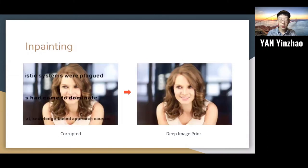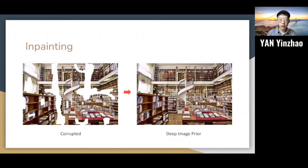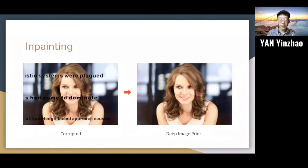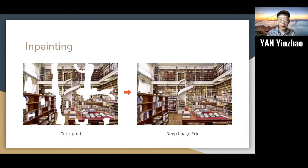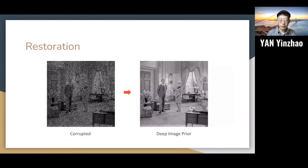For inpainting, originally we have some text on the image or have some empty area on the image. After we apply the Deep Image Prior, we could remove the text or remove the blank area. For restoration, originally we have an old image, and after we apply the Deep Image Prior, we could get a better result.